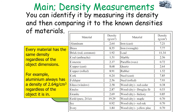For example, every object made of aluminium will always have a density of 2.64 grams per centimetre cubed, regardless of the shape the object is in.